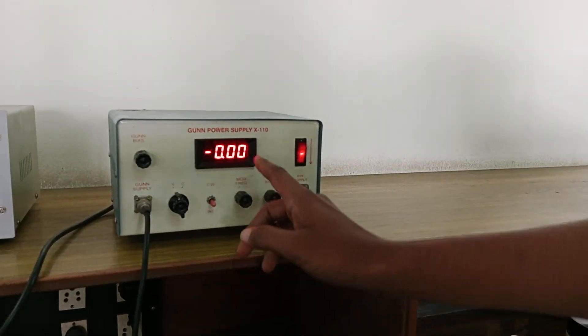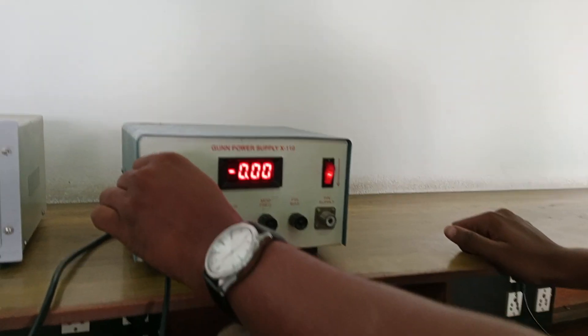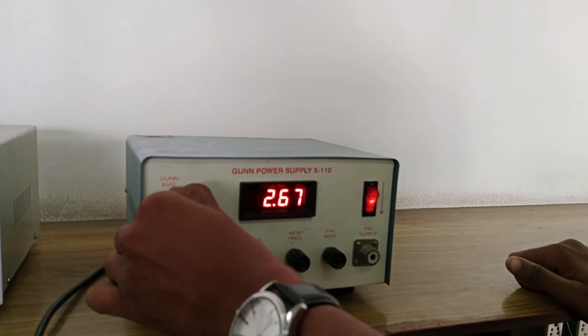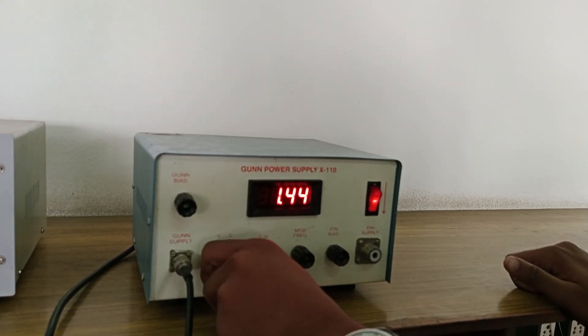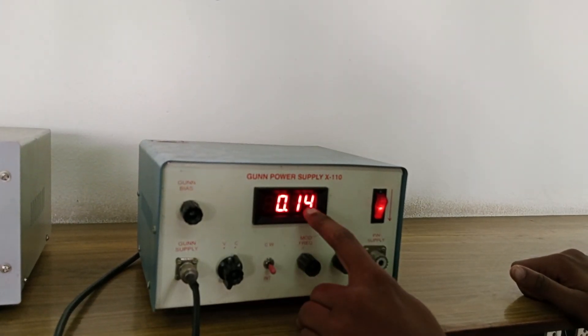So for the first table we will be changing the voltage and noting the bias current. So simply here change this to 1 volt, around 1.4 and we note the bias current.